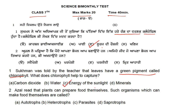The second question: Azal read that plants can prepare food themselves. The key word here is that they make food themselves. Such organisms which can make food themselves — what do you call them? The options are: autotrophs, heterotrophs, parasites, or saprotrophs. The correct answer is autotrophs.